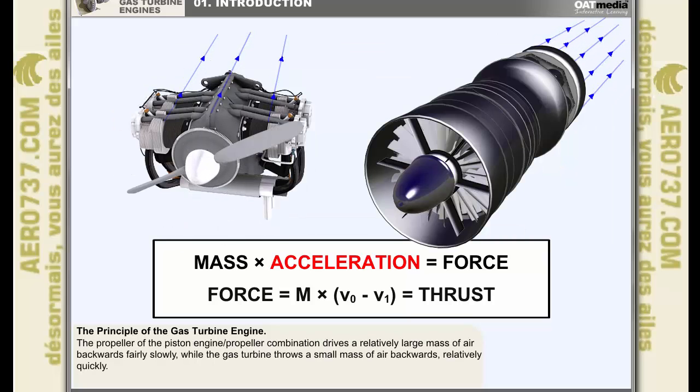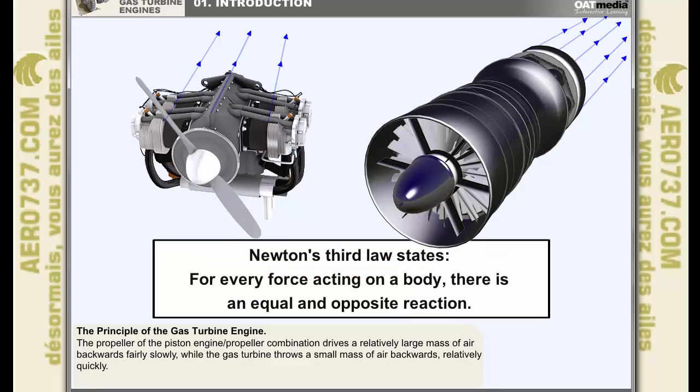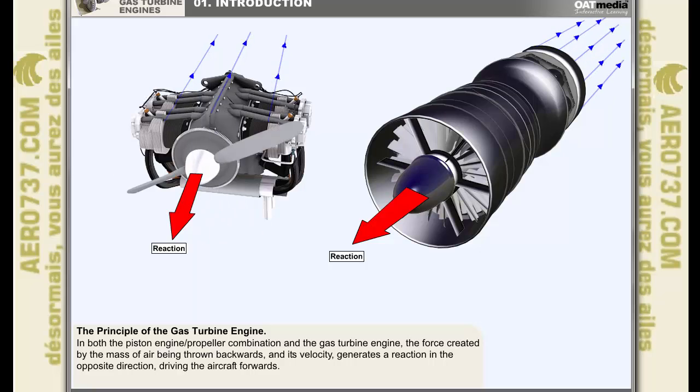With the piston engine propeller combination, the propeller drives a relatively large mass of air backwards fairly slowly, while the gas turbine throws a small mass of air backwards relatively quickly. Newton's third law states, for every force acting on a body there is an equal and opposite reaction. In the two cases quoted, the piston engine propeller combination and the gas turbine engine, the force created by the mass of air being thrown backwards and its velocity generates a reaction in the opposite direction, driving the aircraft forwards.